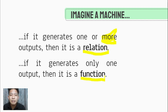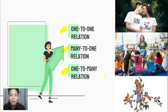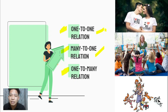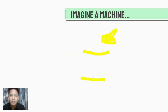Among the different kinds of relations, only one-to-one relation and many-to-one relation illustrate a function, in the sense that they only generate one output. While one-to-many relation is just merely a relation.